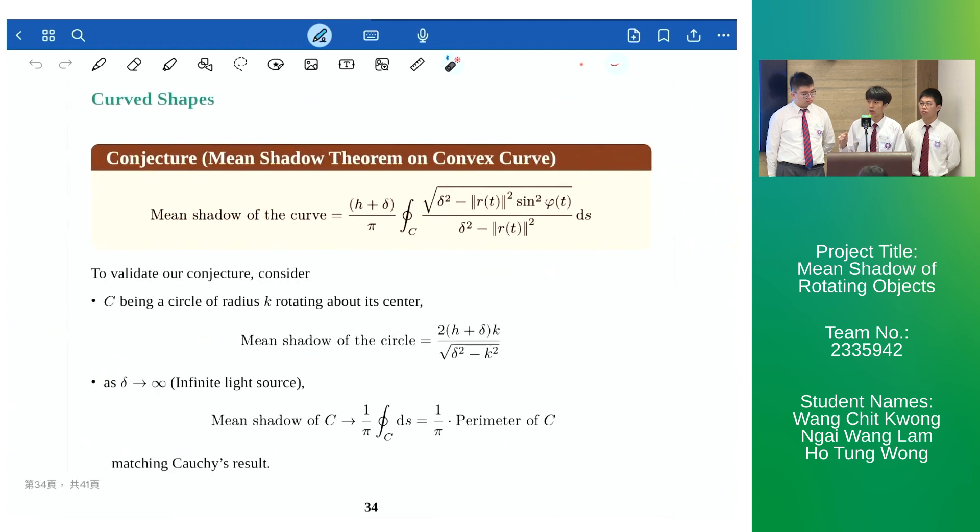To validate our conjecture, we shall consider two simple cases. The first one as C being a circle rotating about its center. Since for a circle the shadow at any particular orientation is actually the same, therefore its mean shadow can be easily computed. The expression derived from the conjecture actually matches with this fact. As for the second case, as the light source height delta tends to infinity, the mean shadow of C then becomes 1 over pi times the perimeter of C, which matches Cauchy's results.